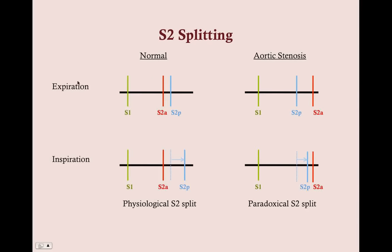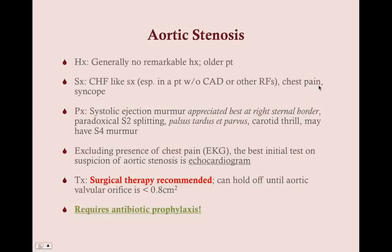During inspiration in aortic stenosis, the pulmonary valve closes later as normal, but the aortic valve is closing so late that now the two sounds merge together — so you get no split during inspiration. You get splitting during expiration rather than during inspiration, which is the opposite of normal — this is paradoxical S2 splitting, and it happens in aortic stenosis. History for aortic stenosis: almost always an older patient with CHF-like symptoms, possibly with chest pain or syncope.